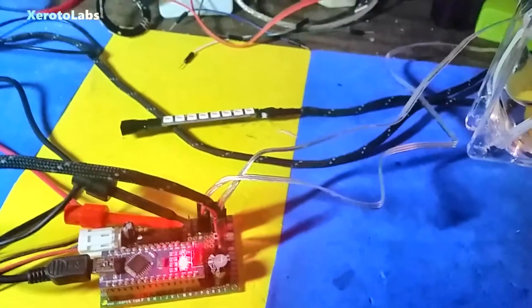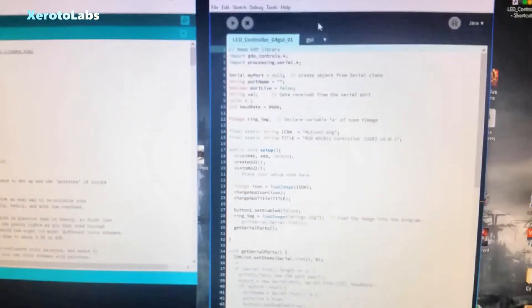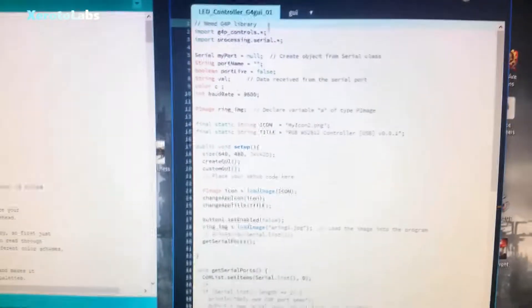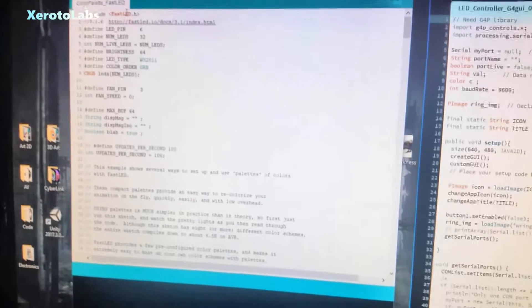So what I did is I made a little bit of custom software using Processing. This is probably not going to white balance. I'm using Processing and Arduino and the fast LED library in Arduino.